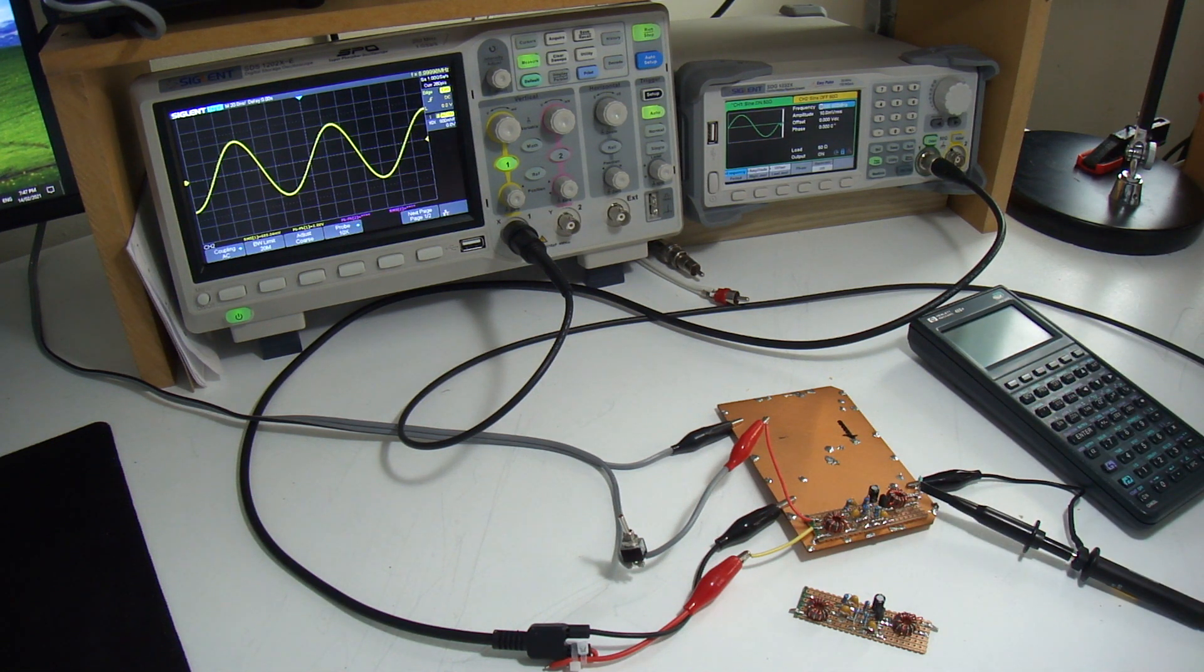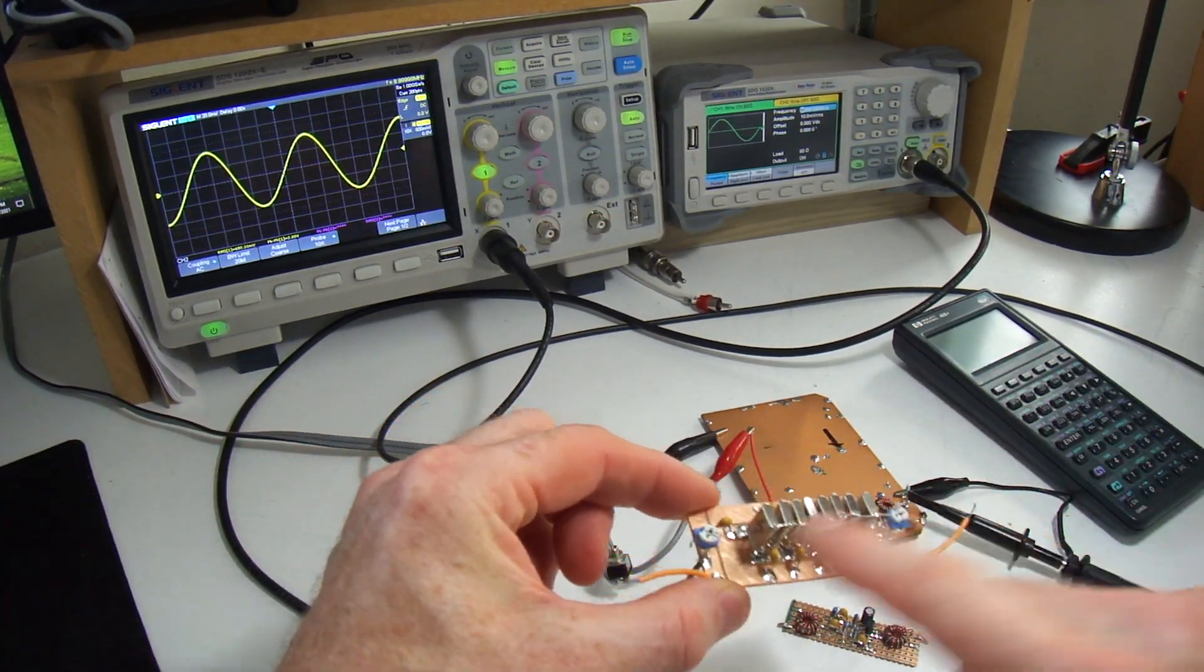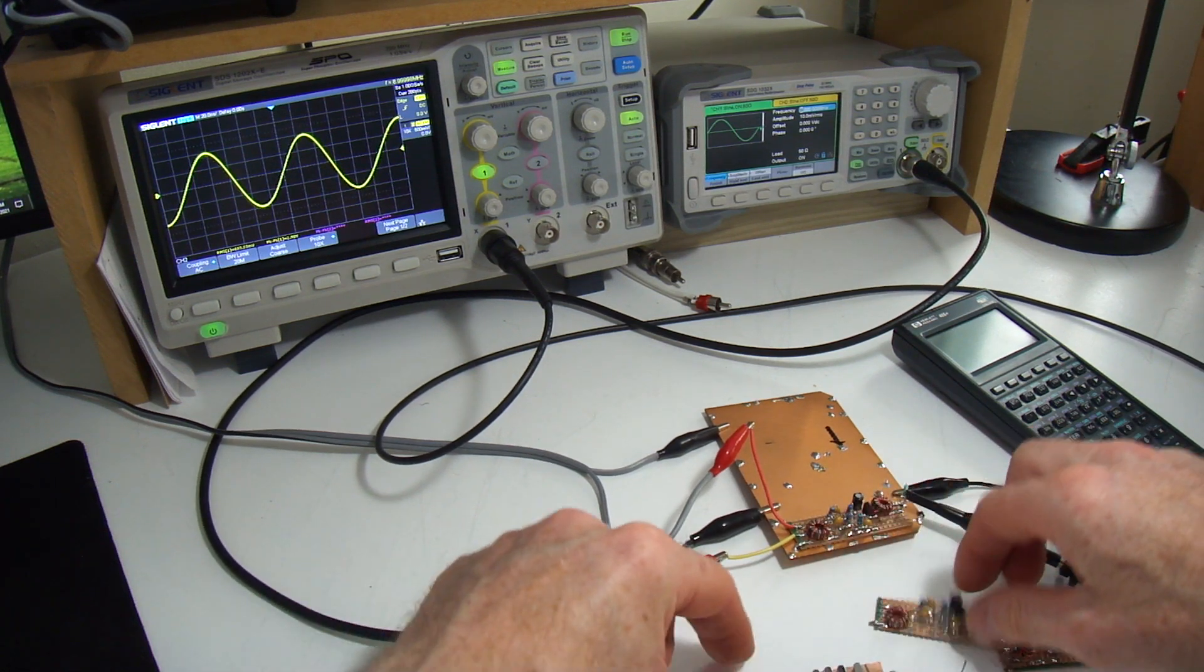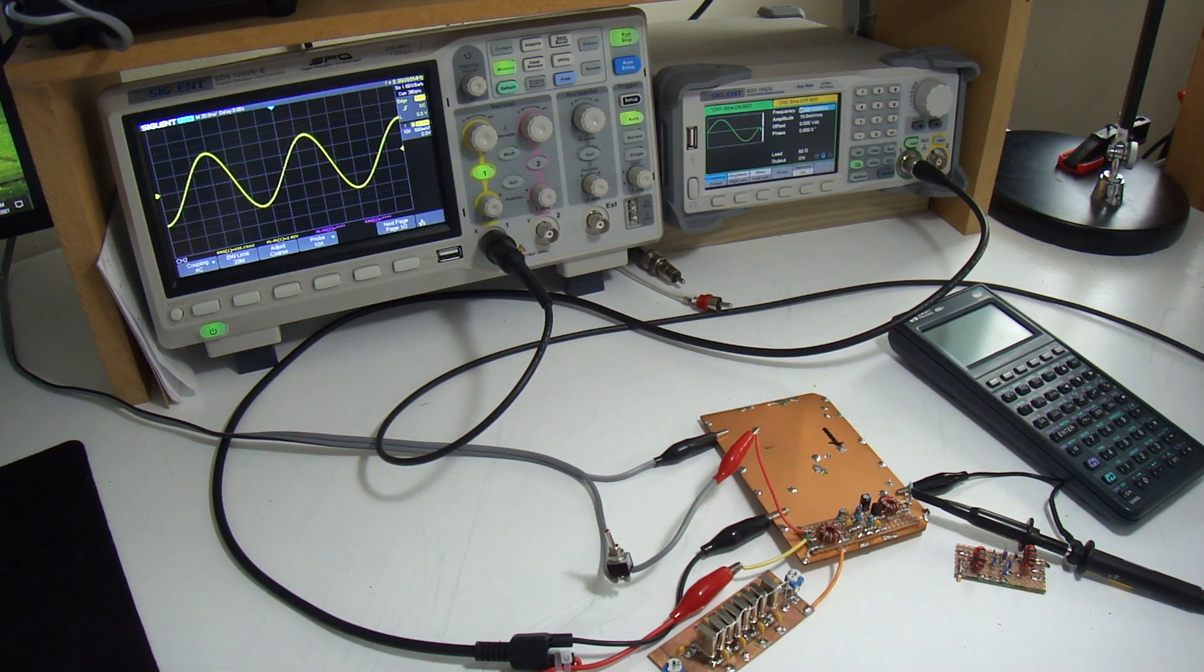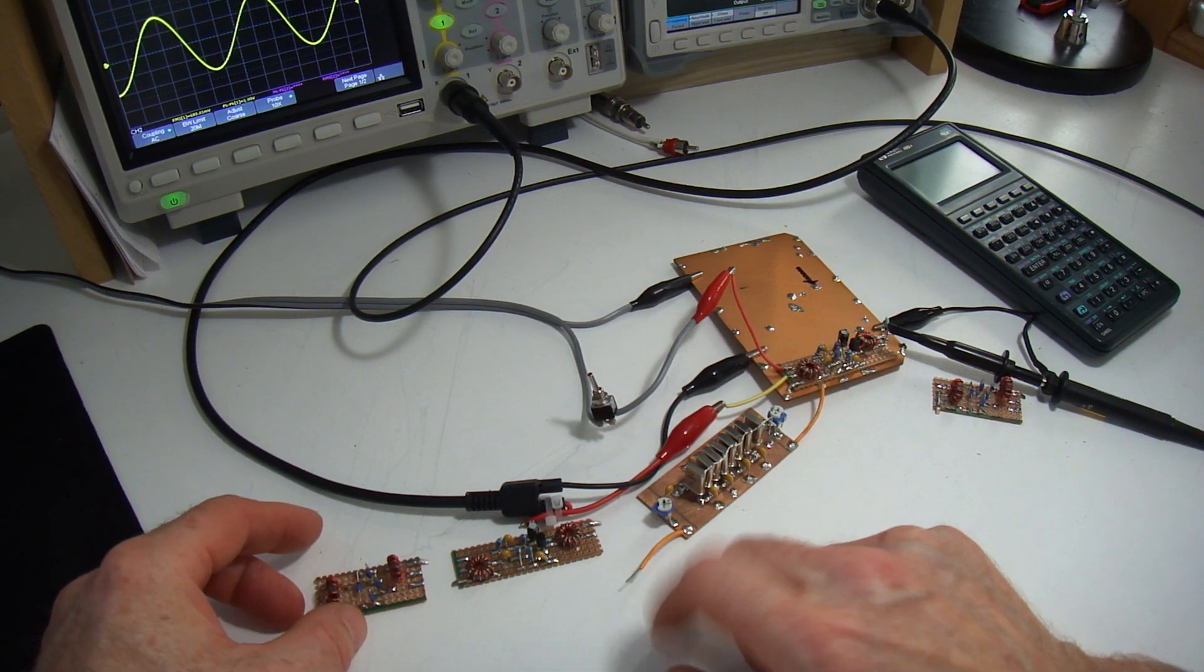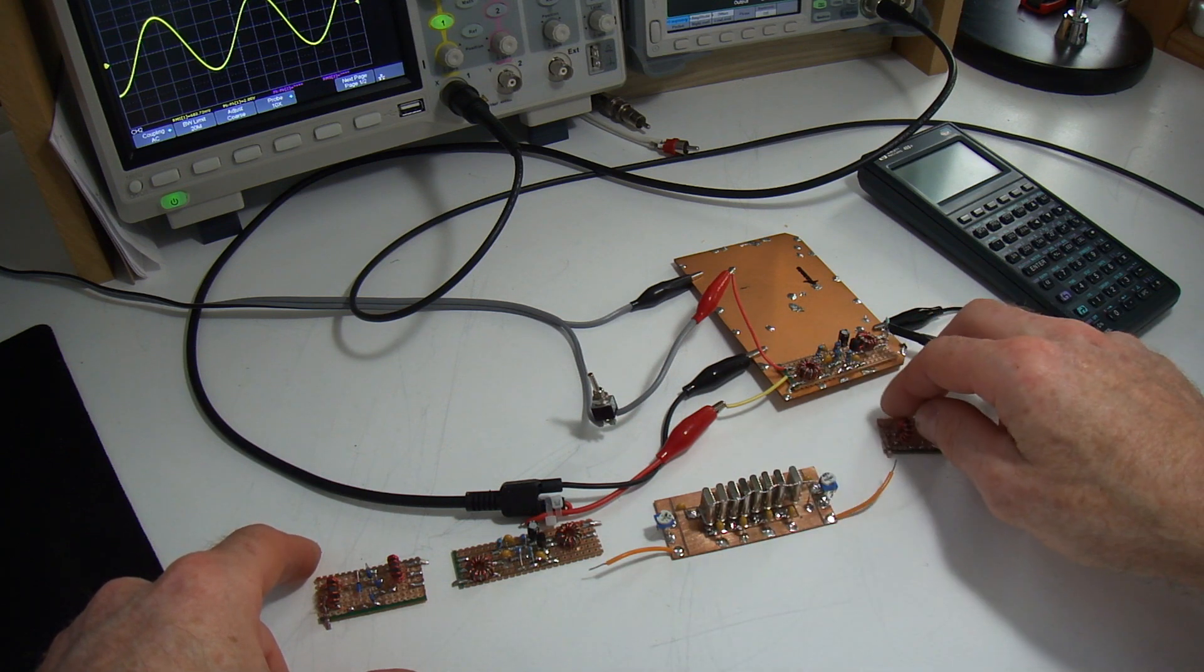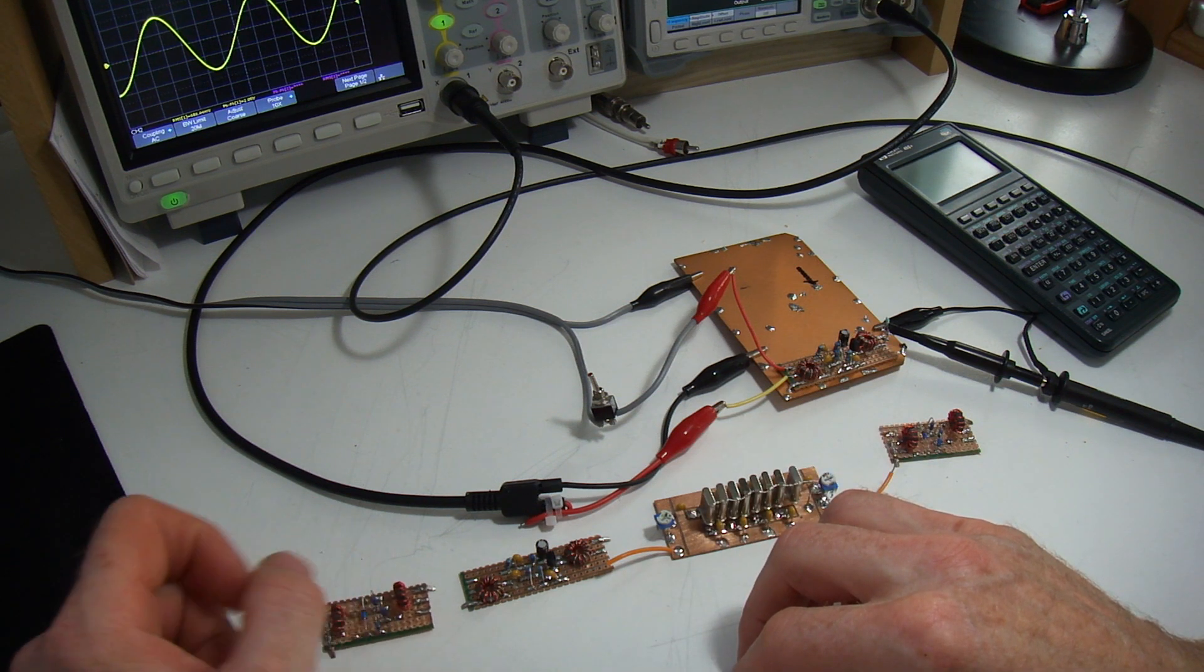The next step will be to make up the bandpass filter because at this stage of the game, we have our crystal filter, the two double balance mixers, they're good to go. We've now got two IF amplifiers, so we can start getting into the game of actually starting to build a radio here, assuming from a receiver point of view. But the bit I'm missing is the bandpass filter before feeding into this. So that's going to be the next step, and I'll probably look to use the appendices that come with solid state design for the radio amateur.